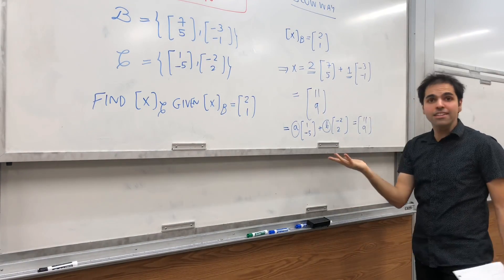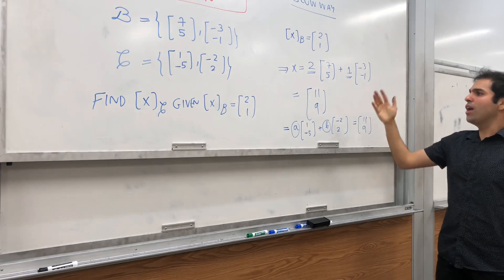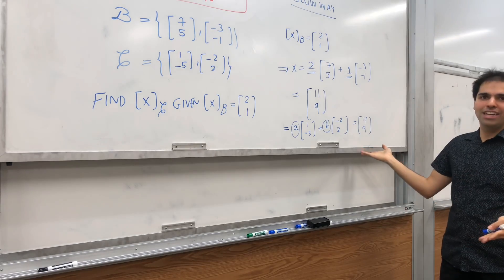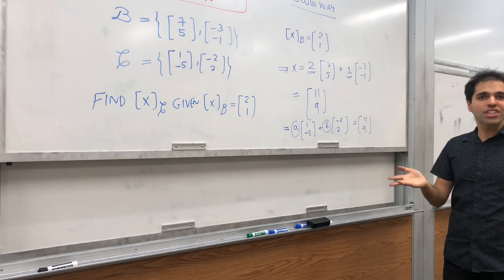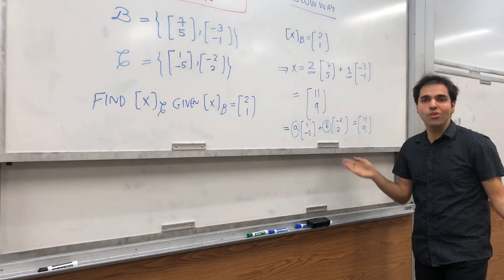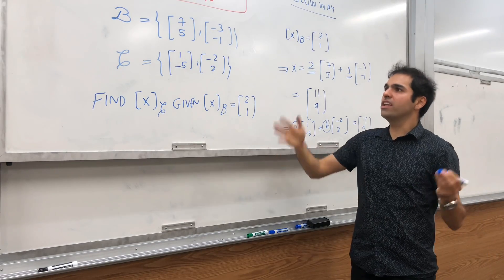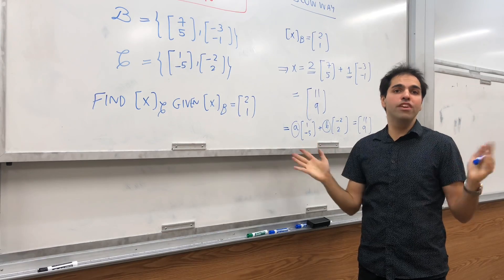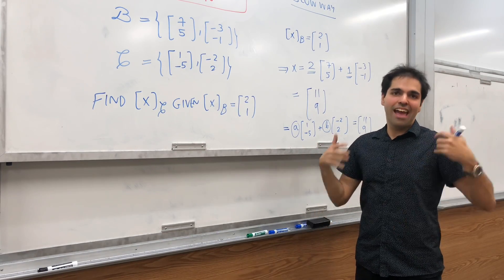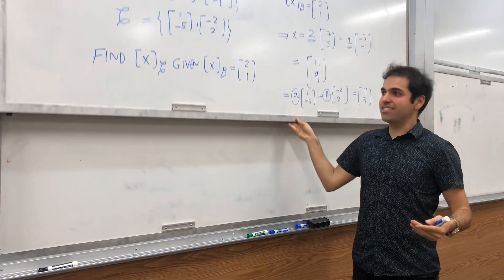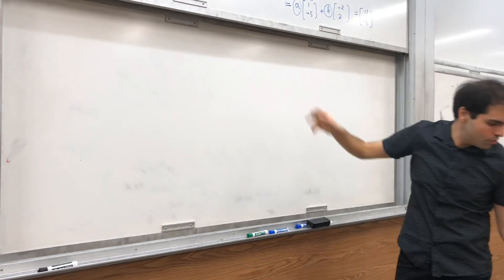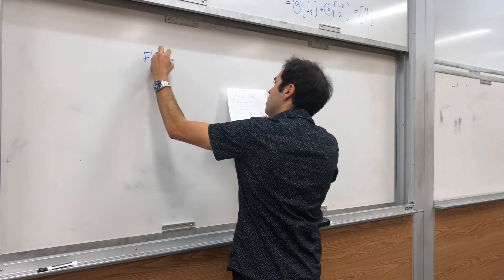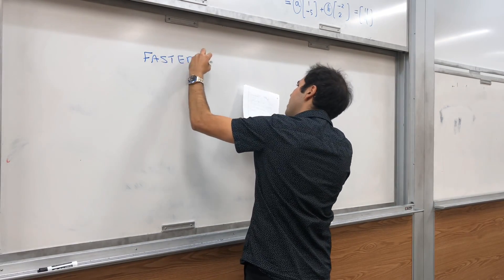That's very slow, because basically, you have this code, you have to recover X, and then you have to find XC. And the question is, is there a faster way? Is there a way to going directly from XB to XC without even having to figure out what X is? And, in fact, there is. So, let me tell you the faster way.